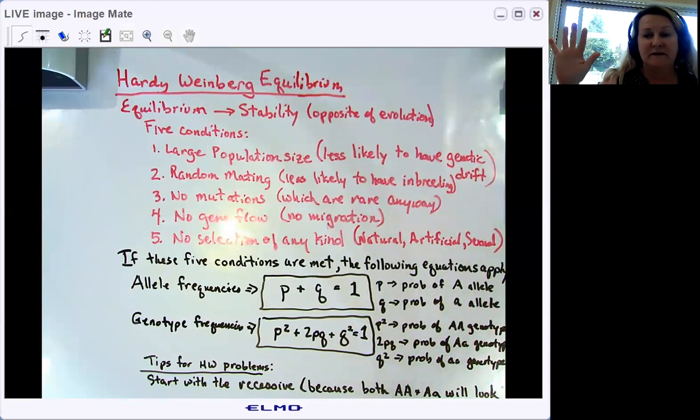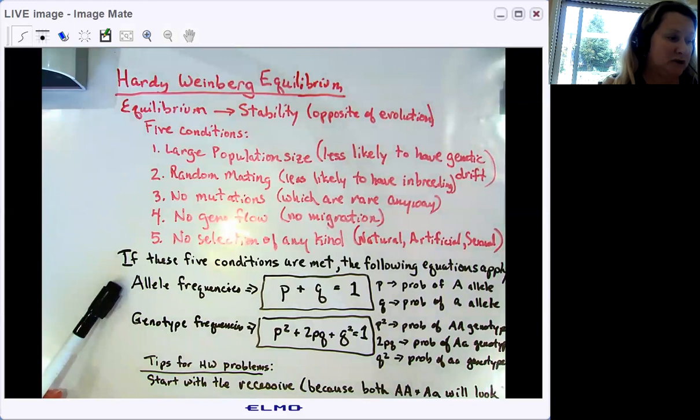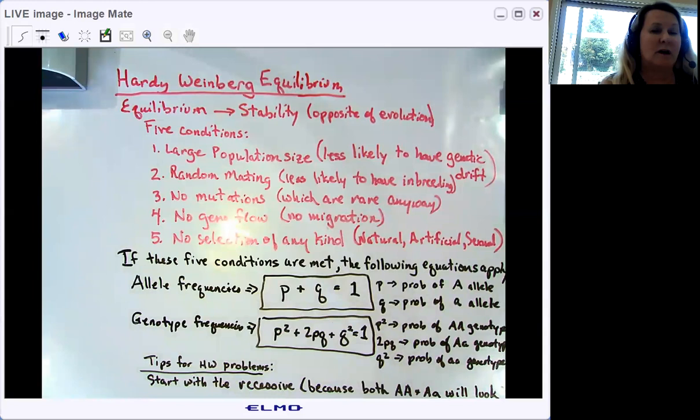If those five conditions are met, then the population will be in Hardy-Weinberg equilibrium. And if a population is in Hardy-Weinberg equilibrium, then the following two equations apply. These equations are on the AP Bio formula sheet. To find the frequency of an allele in a population or gene pool, P plus Q equals one. P represents the probability of inheriting a copy of the dominant allele, which here we're representing by big A.